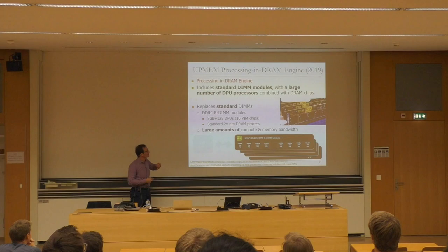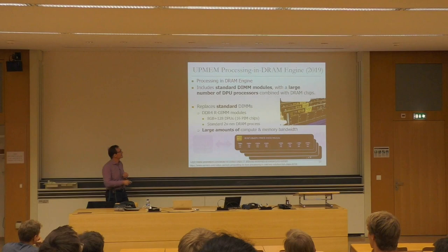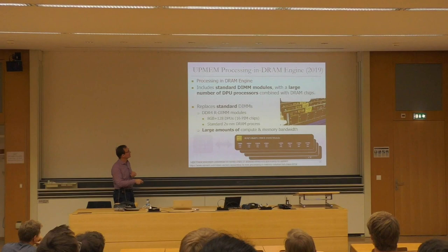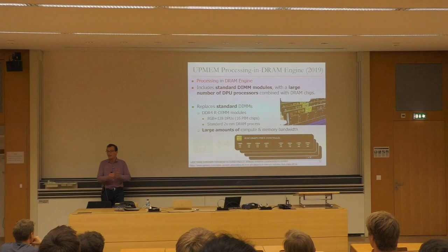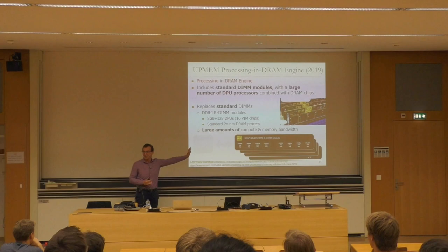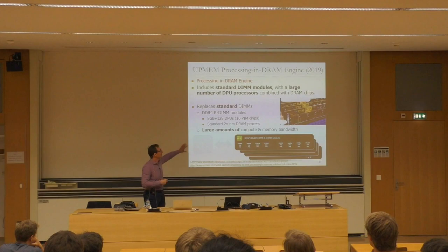Another example that wasn't there when you were taking digital circuits: this was announced at Hot Chips this year in August. It's a processing-in-DRAM engine. These folks put processors inside a DRAM chip — relatively general-purpose processors called data processing units. This is a standard memory module so you can plug it into any computer, and there's a programming model associated with it. You have to fit your applications to that programming model to take advantage of the large amounts of compute and memory bandwidth coupled together inside the memory chip.